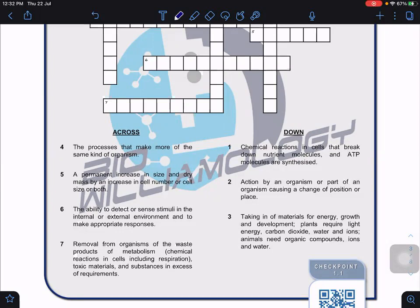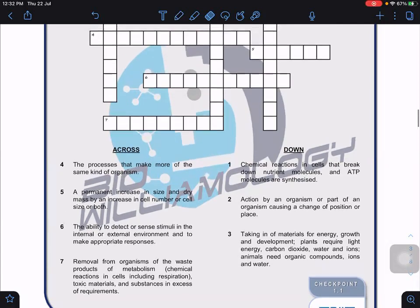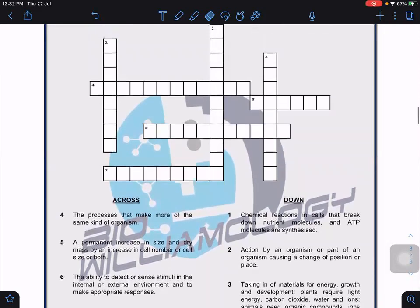I assume you've done activity 1.1, so let us look at the answers. See whether you got it correctly. Look at across - number four: the process that makes more of the same kind of organism. So reproduction, either asexual or sexual reproduction.